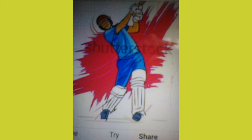Now we look at the biggest cricket stadiums in India — their name, capacity, and state. No. 1: Eden Gardens, capacity 68,000, located in West Bengal.